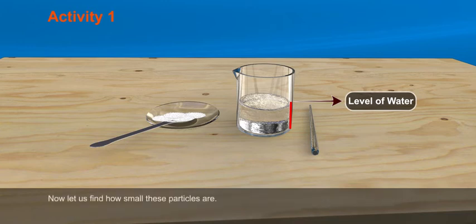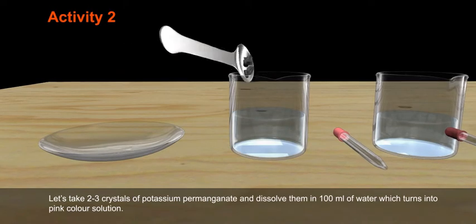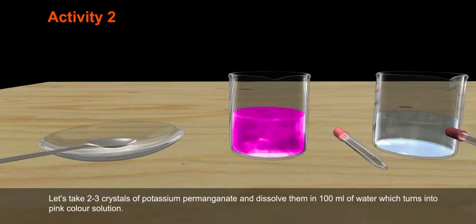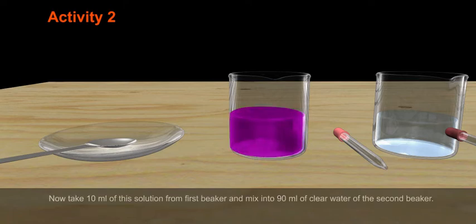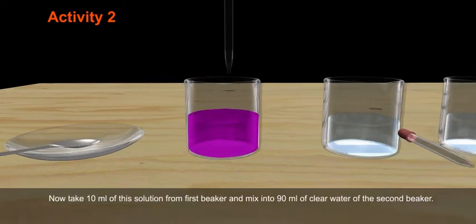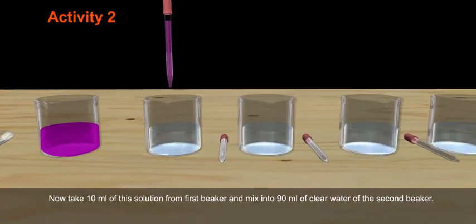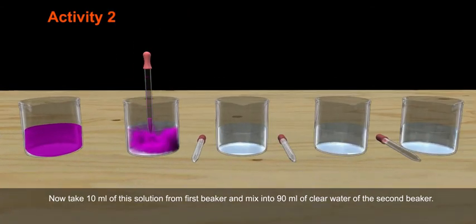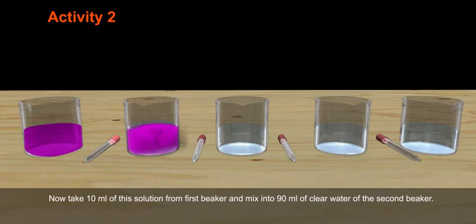Now let us find how small these particles are. Activity 2. Let us take 2 to 3 crystals of potassium permanganate and dissolve them in 100 ml of water which turns into pink color solution. Now take 10 ml of this solution from first beaker and mix into 90 ml of clear water of the second beaker.